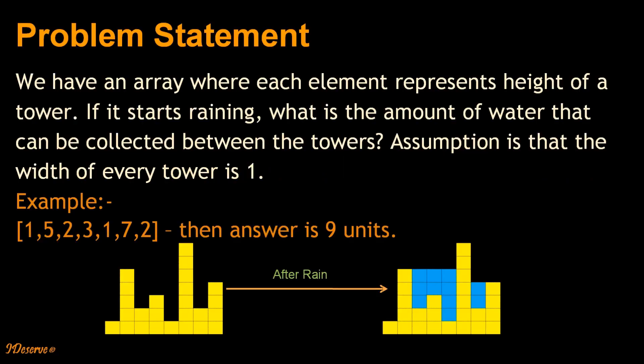So the problem statement is: we have an array where each element represents height of a tower. If it starts raining, what is the amount of water that can be collected between the towers? The assumption here is that width of every tower is 1.